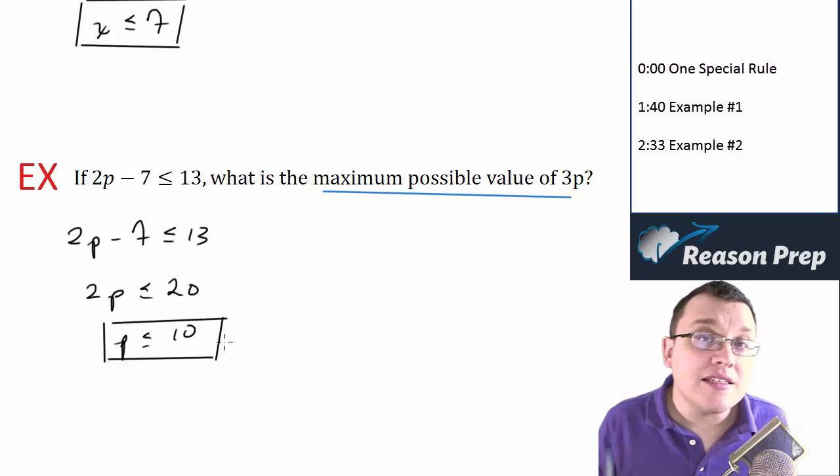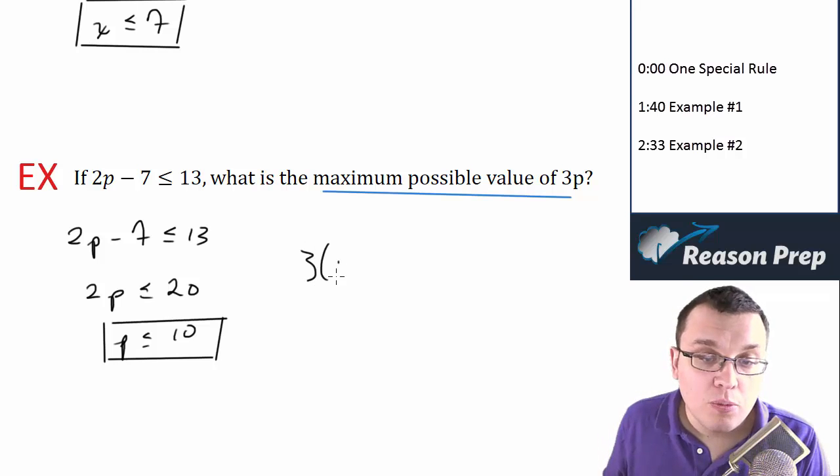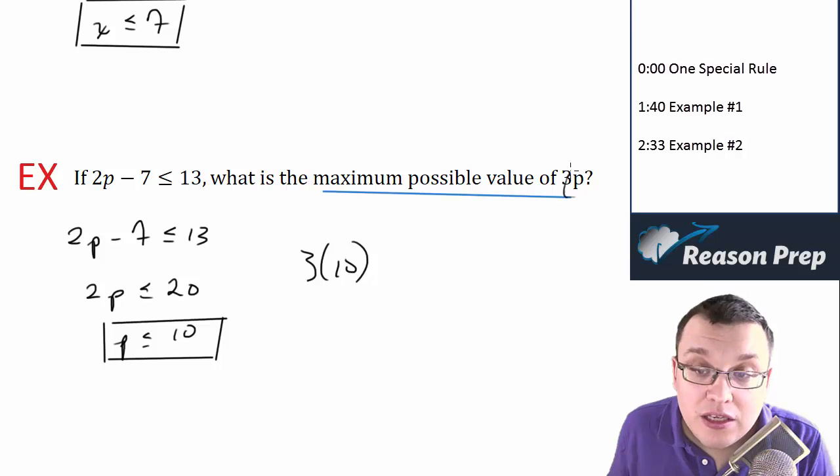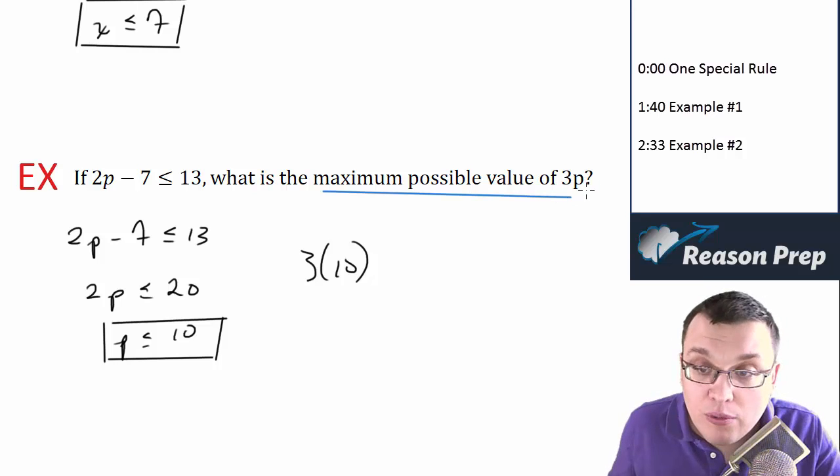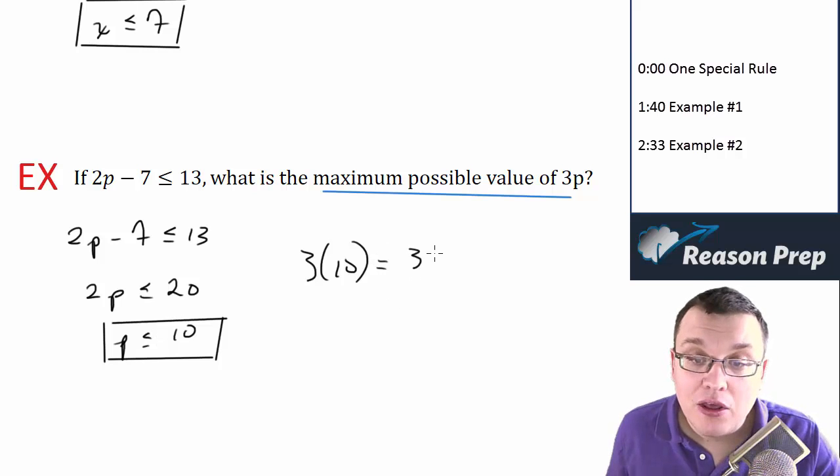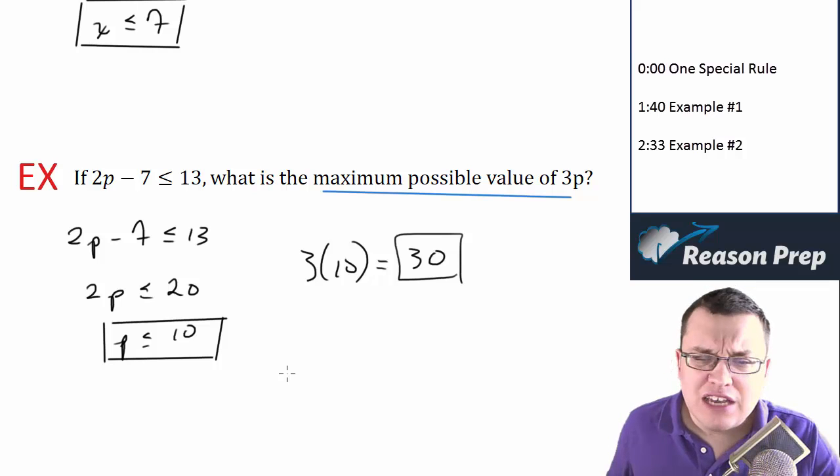So think about this, if the biggest p could be is 10, the biggest 3p could be would be when p would be equal to 10. We want to maximize this, which means the 3 is here to stay, but we want to then maximize the p. What is the p going to be? Well, the maximum p is 10, so the maximum that 3p could be is 30.